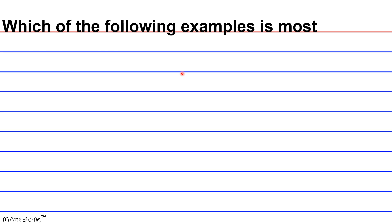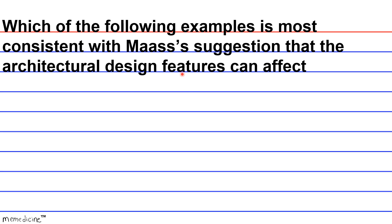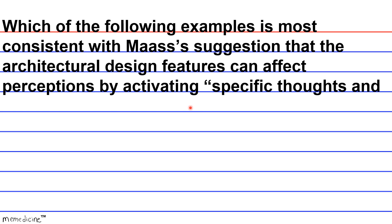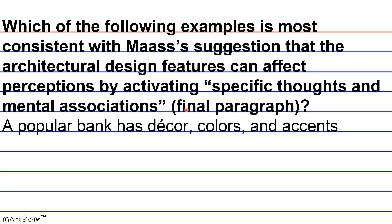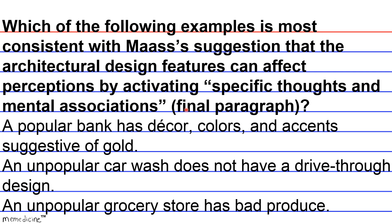Question: Which of the following examples is most consistent with Mass's suggestion that architectural design features can affect perception by activating specific thoughts and mental associations? This is in the final paragraph. Is it A) a popular bank has decor, colors, and accents suggestive of gold; B) an unpopular car wash does not have a drive-through design; or C) an unpopular grocery store has bad produce?